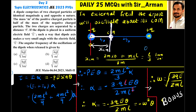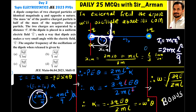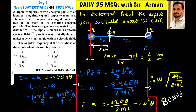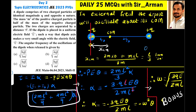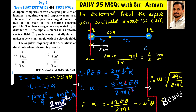For the dipole rotating about the center of mass: the negative charge has mass 2m and is at distance l/3 from the center of mass, giving I₁ = 2m(l/3)² = 2ml²/9. The positive charge has mass m and is at distance 2l/3 (since the total separation is l and l/3 is already accounted for), giving I₂ = m(2l/3)² = 4ml²/9. The total moment of inertia is I = 2ml²/9 + 4ml²/9 = 6ml²/9 = 2ml²/3.